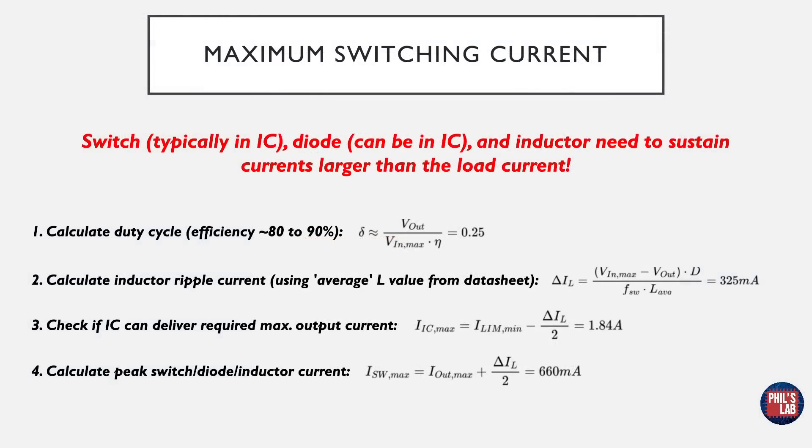So now that we have our requirements in place, as well as we've chosen a suitable, at least initially suitable IC, we need to go through some calculations. The first is that of the maximum switching current. We know our load current approximately, approximately half an amp, but it actually happens that the switches, diodes, and inductor currents will typically be larger, or peak currents will be larger in a switching regulator, and we need to make sure, when we've picked a device and inductors and so on, that these can sustain that current. The switch is typically in the IC, and it is with our chosen integrated circuit as well. The diode can be in the IC, and it happens to be in this case.